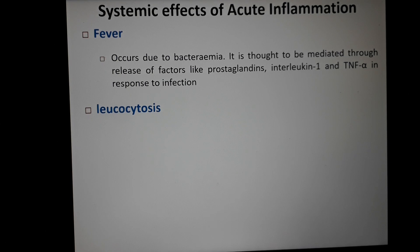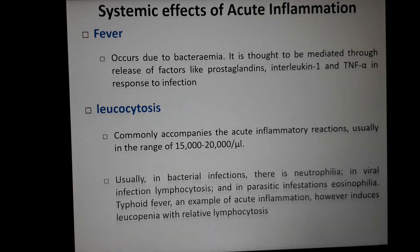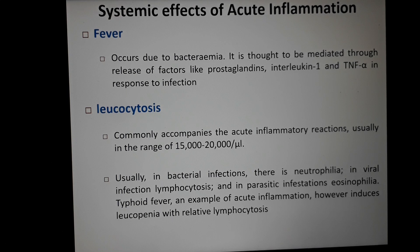The second effect is leukocytosis — an increase in the number of leukocytes. This commonly accompanies acute inflammatory reactions and is usually in the range of 15,000 to 20,000 per microliter. Leukocytosis in bacterial infection is mainly due to neutrophilia, in viral infection there is lymphocytosis, and in parasitic infestations there is eosinophilia.